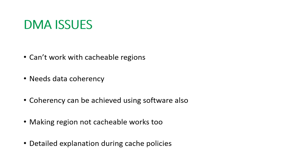Now let's talk about the second major issue — DMA. The DMA cannot work in cacheable regions because it needs data coherency. Hardware support for data synchronization is not available in STM32F7 and H7 series MCUs. We can achieve coherency using software, typically by cleaning and invalidating the cache. But an easier way is to use MPU to set the region as non-cacheable, so that the DMA can synchronize with the CPU or another DMA.